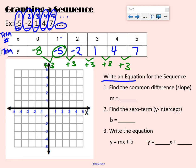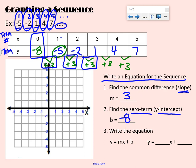So let's answer these questions. Write an equation for the sequence. Find the common difference, find that slope. Well, your common difference is 3. We were changing by 3 each time, so our slope is 3. Find the zero term, your y-intercept. Well, we did that. That was negative 8. And then we're going to write the equation, so y equals mx plus b. So m goes first next to x, so y equals 3x plus b, so plus negative 8.